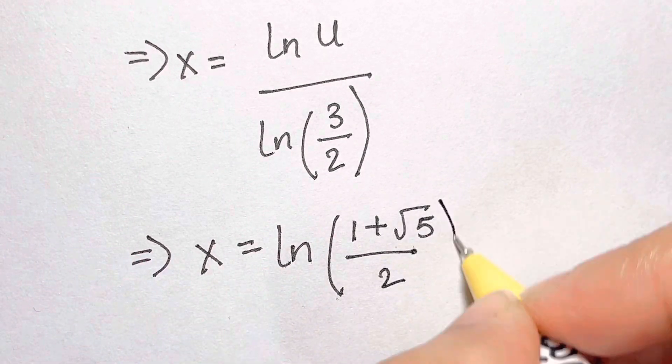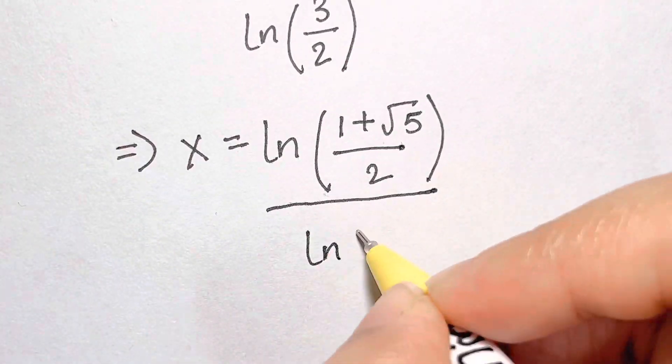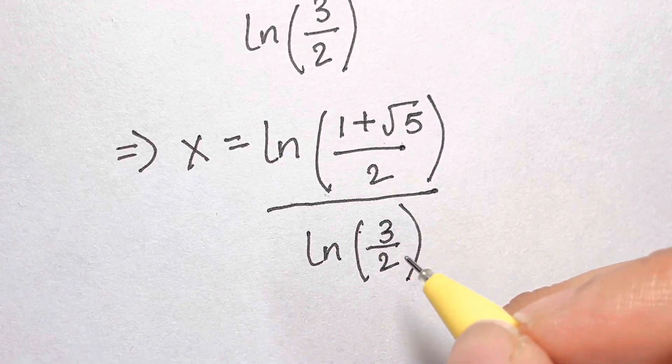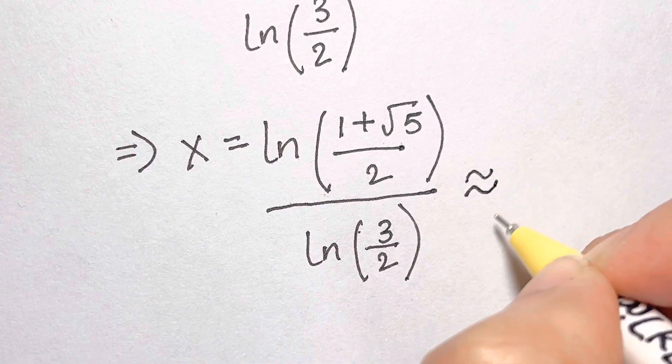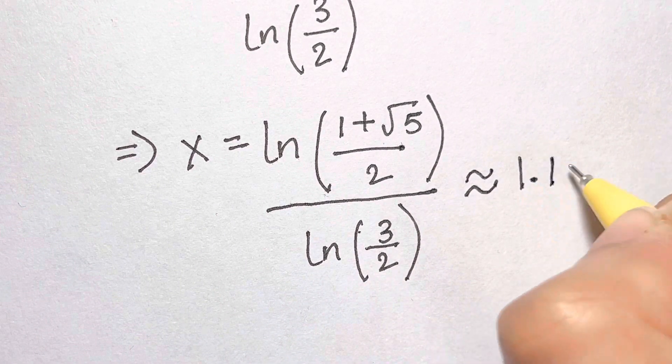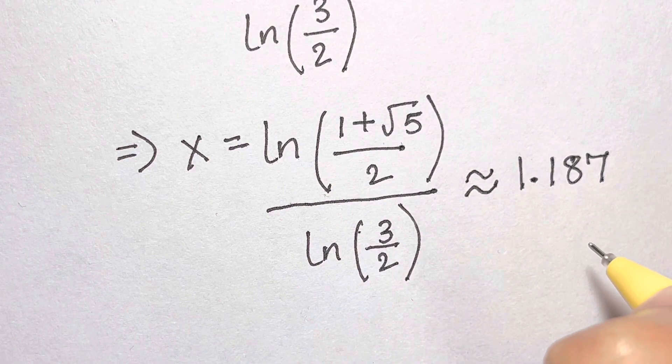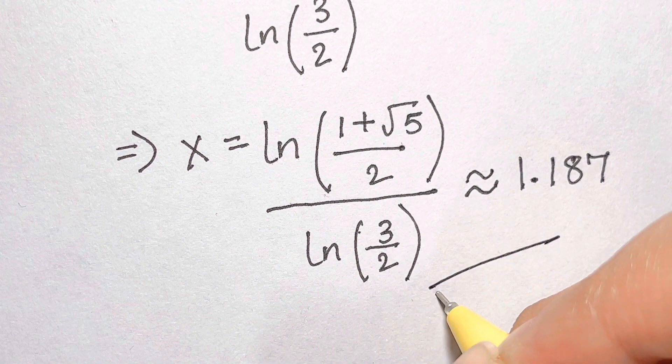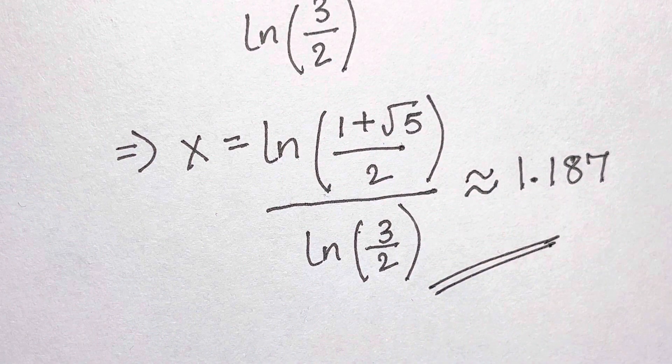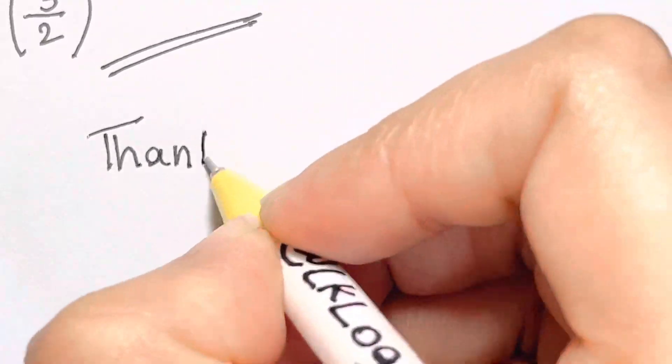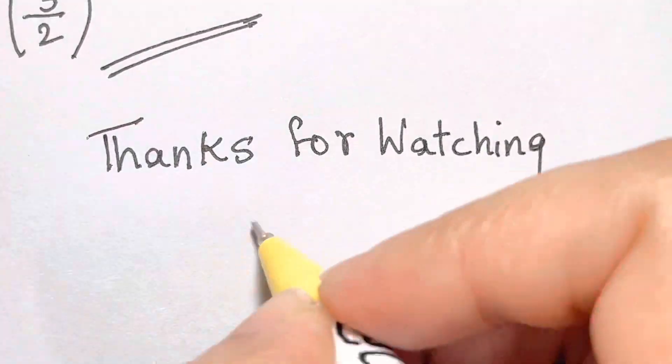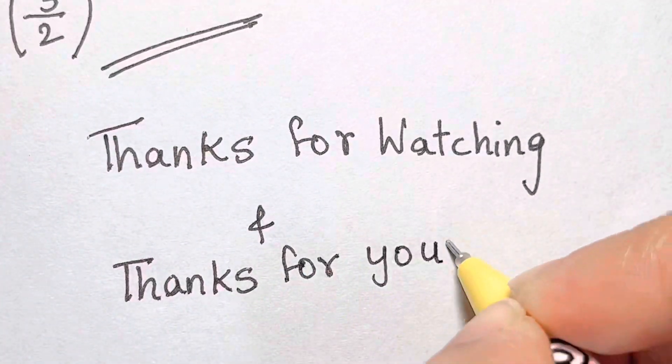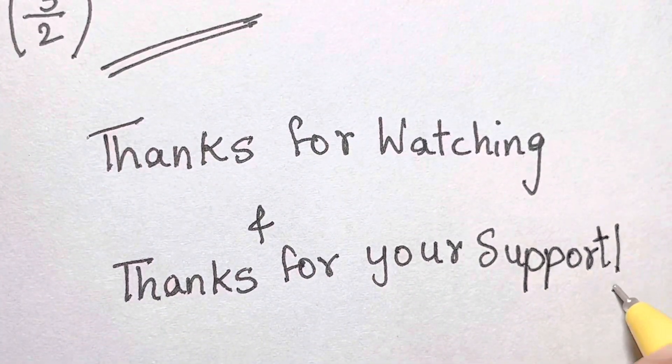x equals natural log of the golden ratio divided by the natural log of 3 over 2, and this simplifies to be approximately 1.187. At first the problem was quite intimidating, but with clever substitution we found the golden answer. Thanks for making LK Logic one of the best channels on YouTube. As always, thanks for watching and thanks for your support.